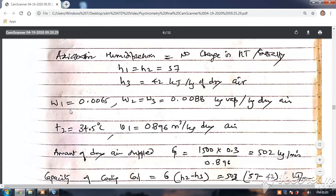Omega 1 is 0.0065, omega 2 is equal to omega 3 is equal to 0.0088. T2 is equal to 34.5 degrees centigrade. Specific volume is 0.896 meter cube per kg.